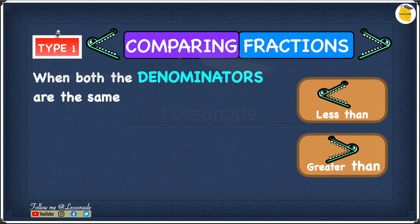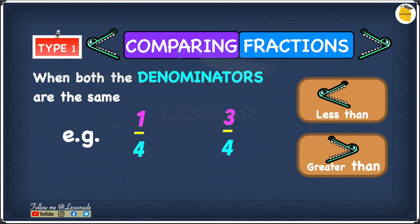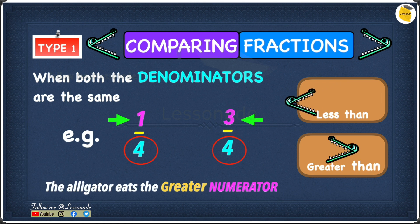Type one is how to compare fractions when both the denominators are the same. Looking at the example: one over four and three over four. The denominator is the number at the bottom. In one over four it is four, and in three over four it is also four — both the same denominator. In this case you compare the numerators, which are one and three. The larger one is three, so the alligator eats the greater numerator. Therefore one over four is less than three over four.